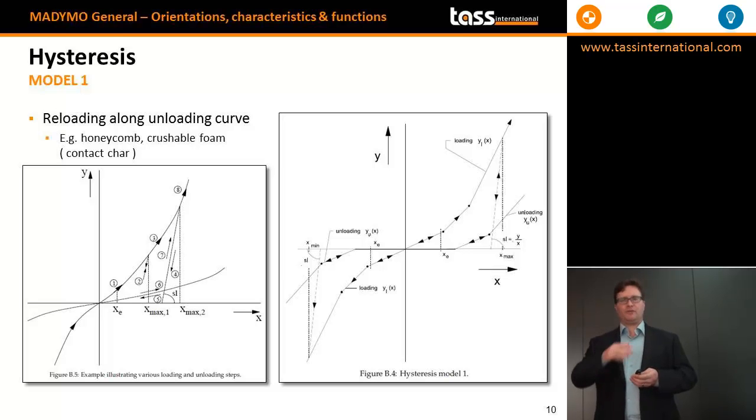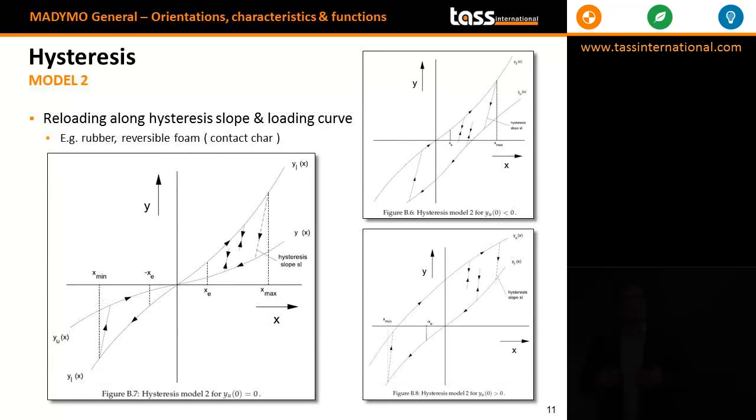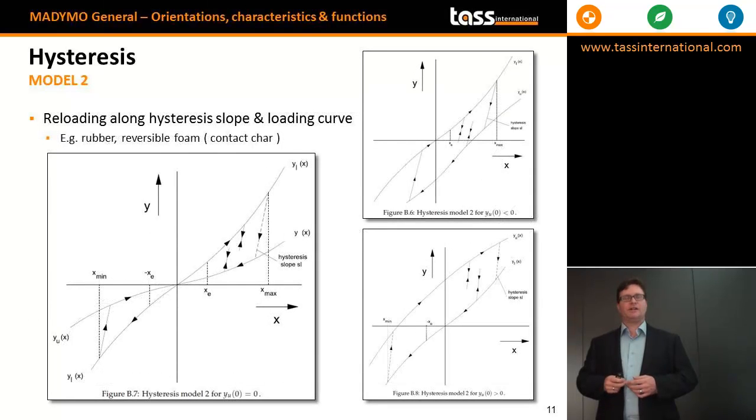The second model provides the user the opportunity to truly dissipate energy out of the simulation. This is done by unloading along the hysteresis slope and the unloading curve, and subsequent reloading along the hysteresis slope and back onto the loading curve. This type of energy dissipation is typical for materials like rubber and reversible foam.